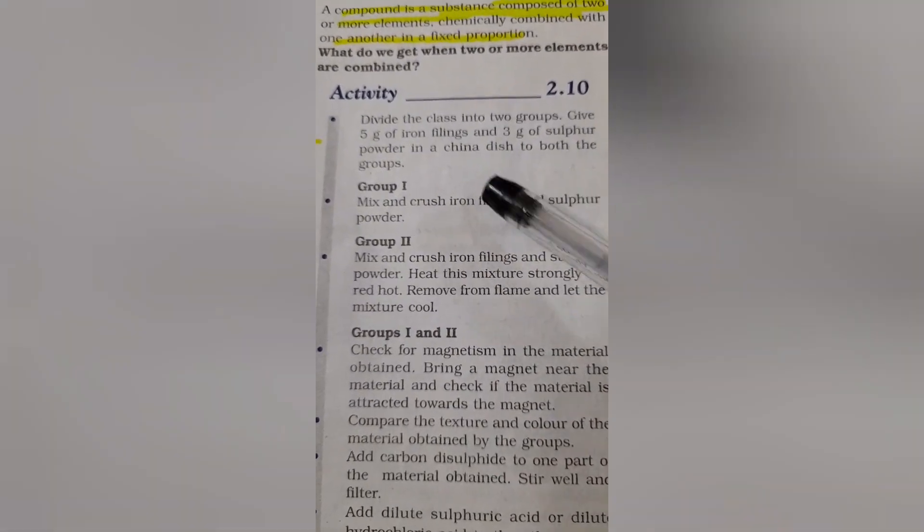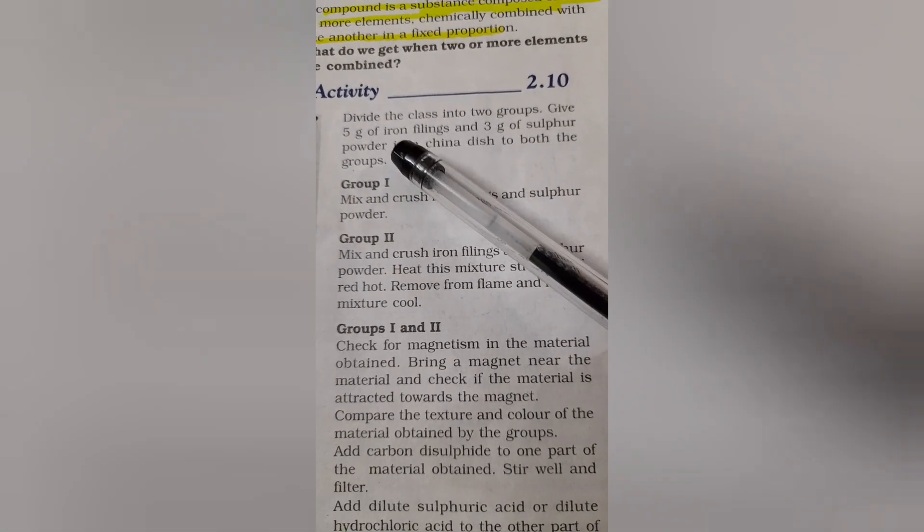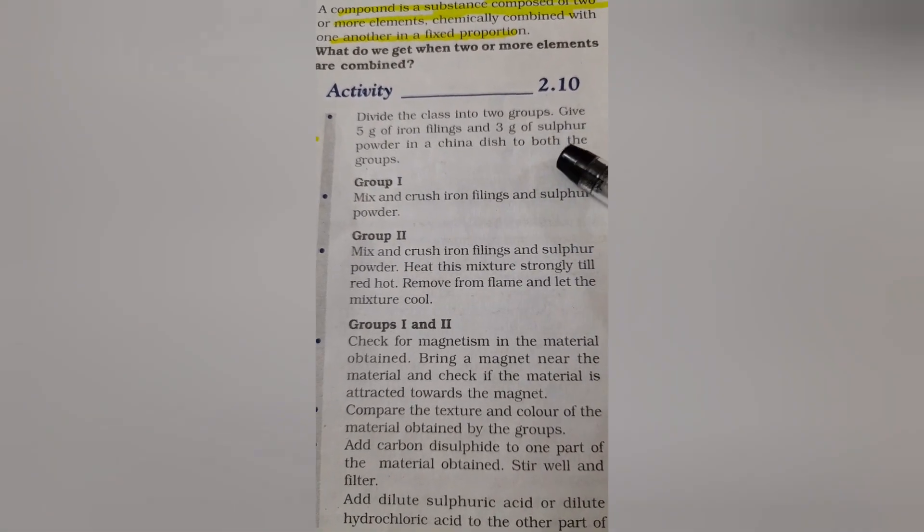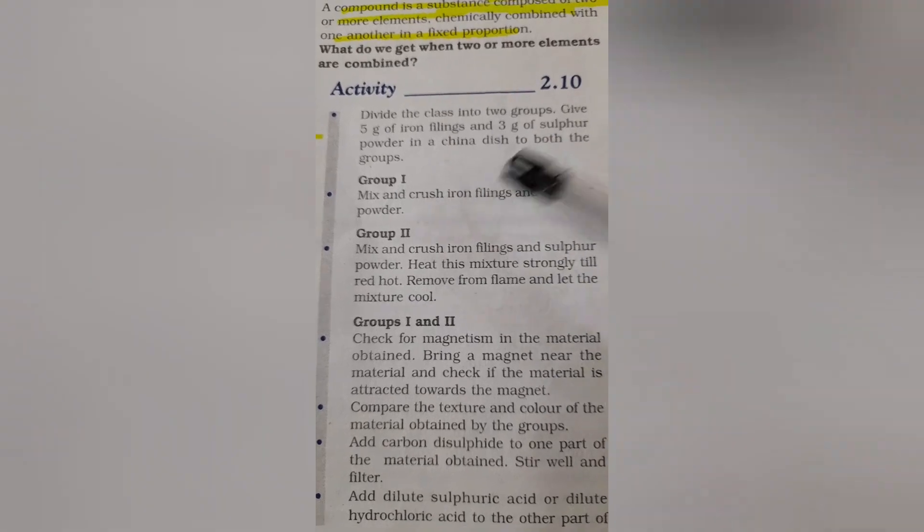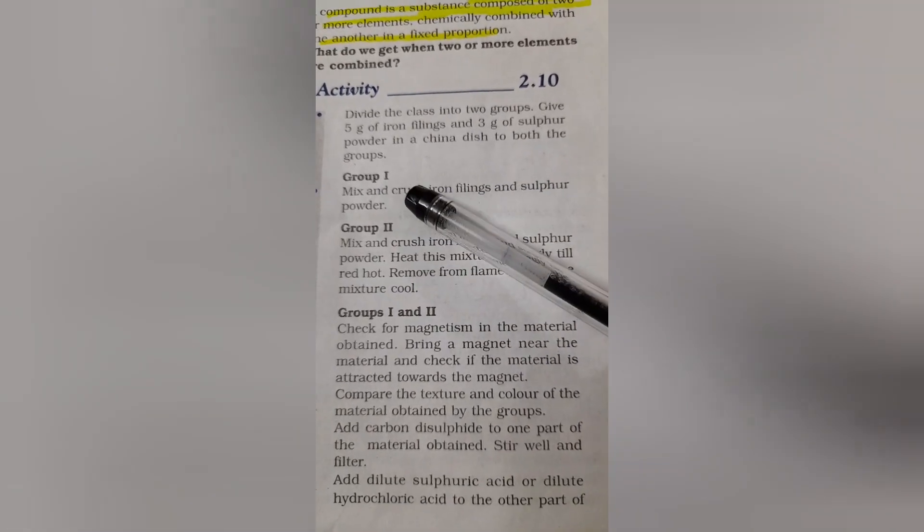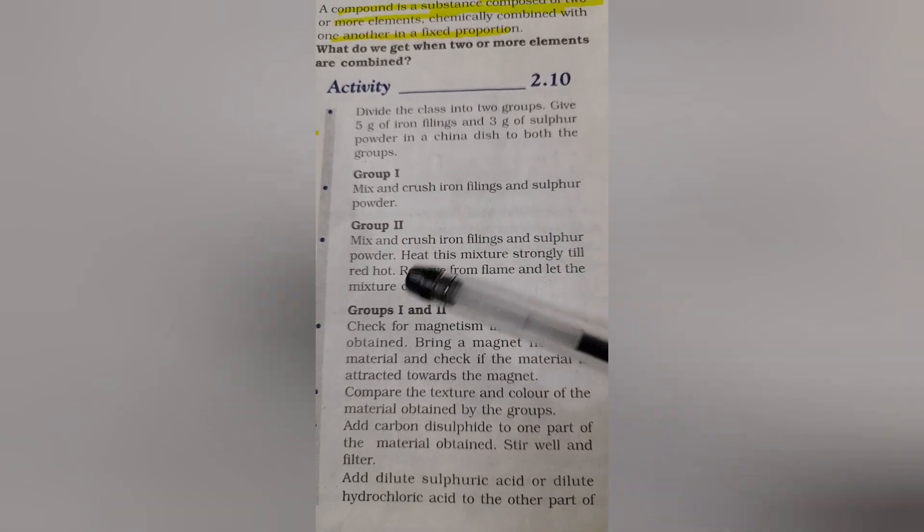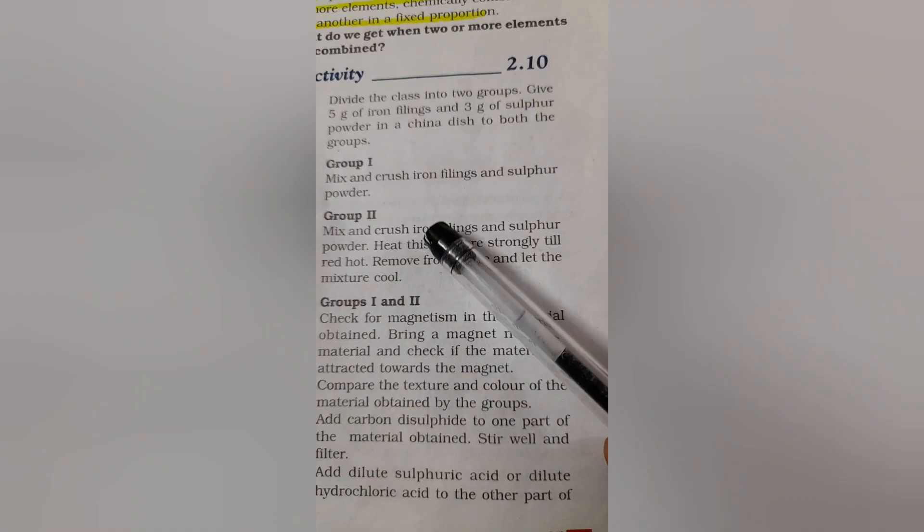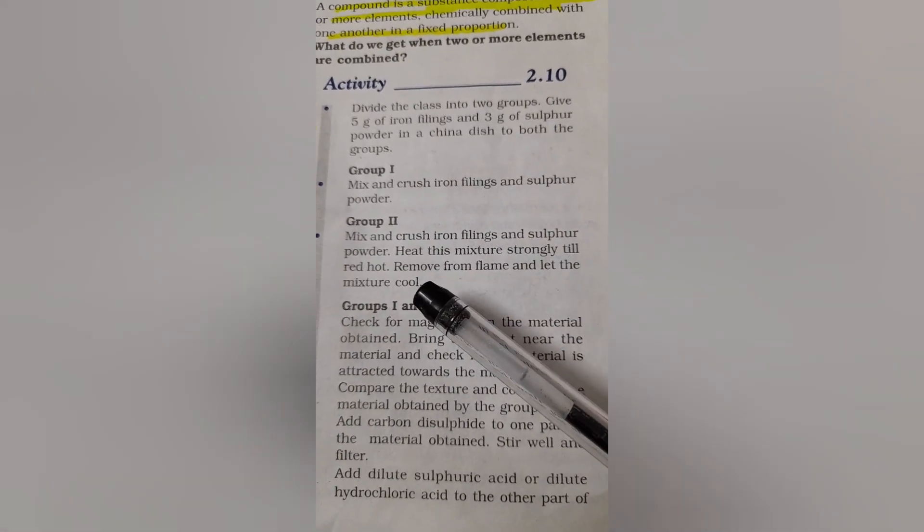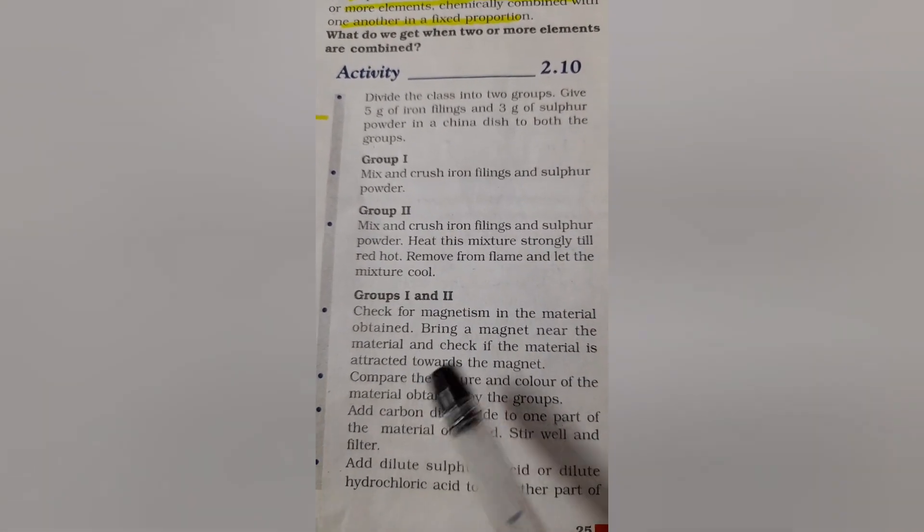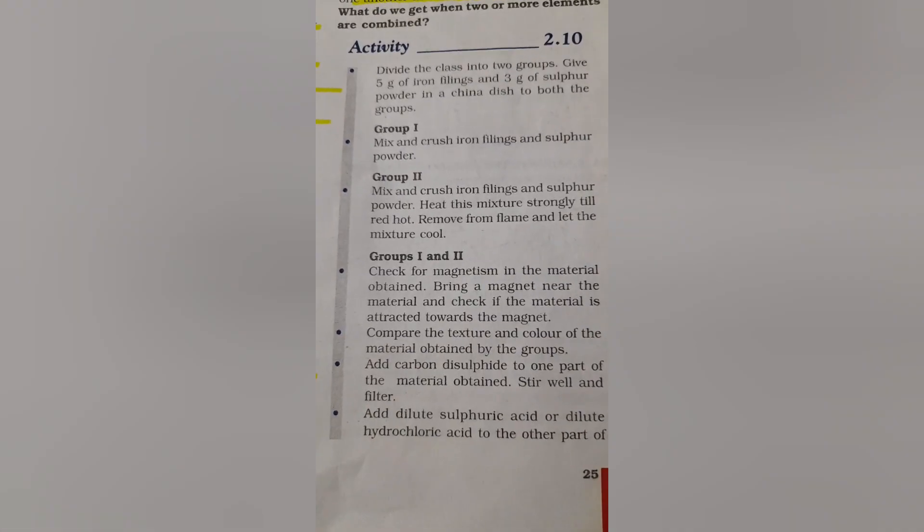You can divide the class into two groups. Give one group 5 grams of iron filings and sulfur powder in a china dish. What does group 1 do? Mix and crush iron filings and sulfur powder. Whereas group 2 mix and crush iron filings and sulfur powder, heat it strongly and remove from the flame and let it cool.